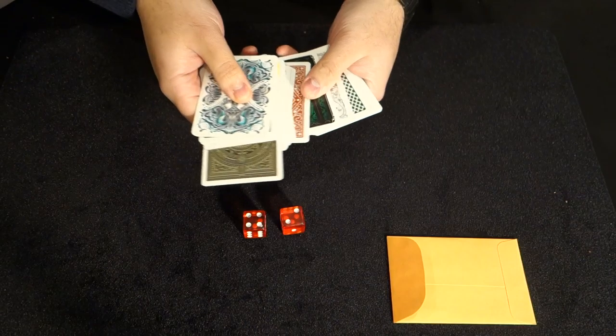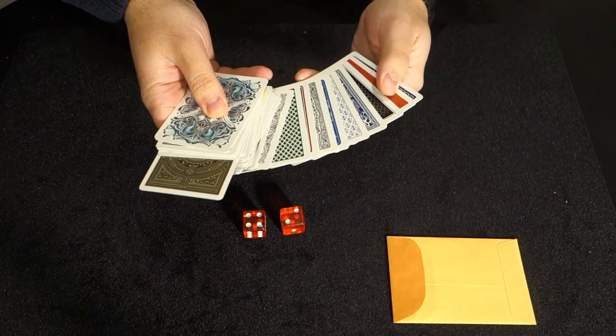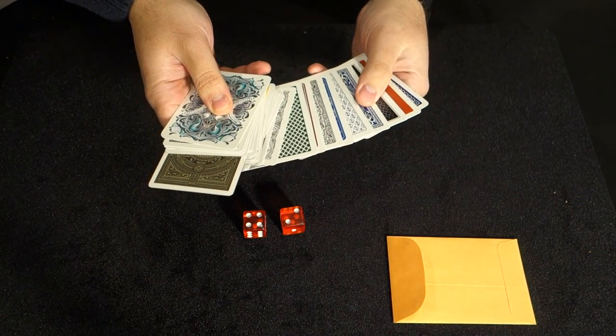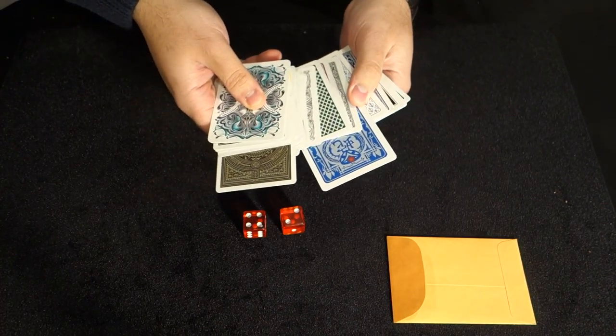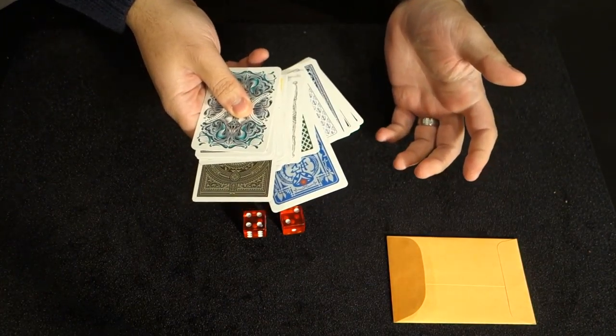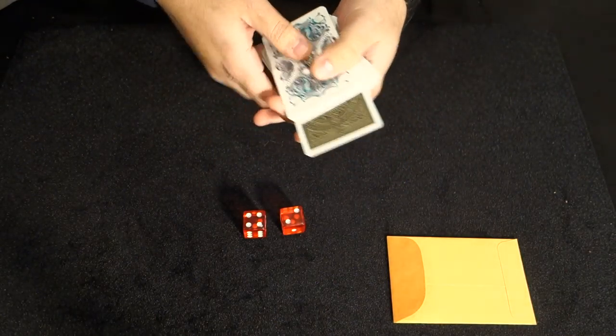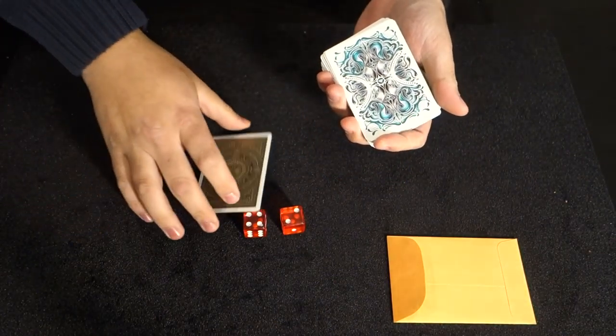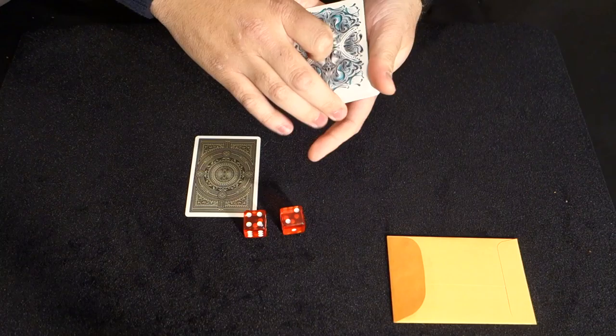Now, here's the interesting thing. You rolled six. So had you set bottom, it would have been one, two, three, four, five, six. It would have been a totally different card. Remember that. But you set top, and you rolled six. So we'll go with this card here.